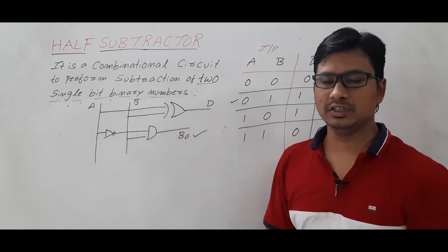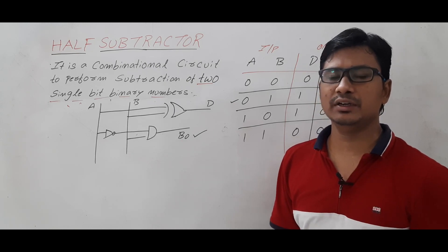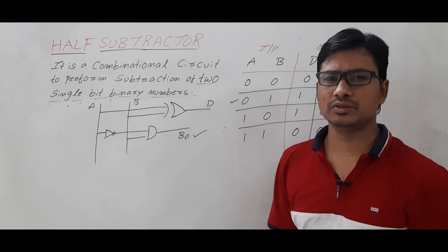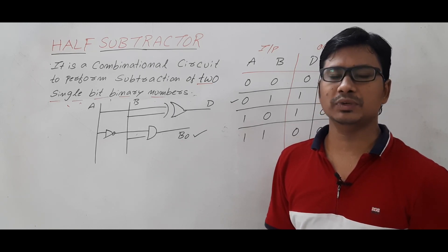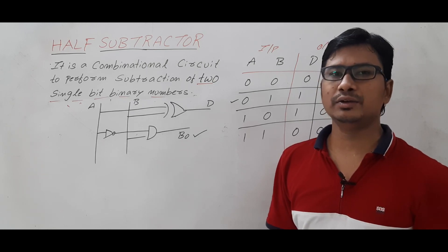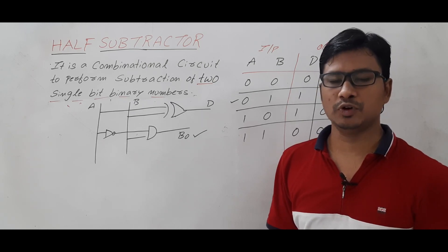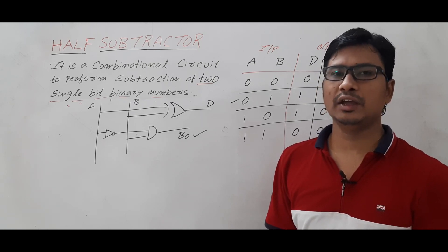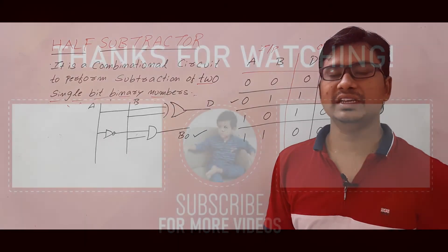So this is the combinational circuit for the half subtractor. I hope you have understood what a half subtractor is, what its truth table is, and what its combinational circuit looks like. If you still have any doubts, feel free to ask in the comment section. I will try to clear your doubts as early as possible. Thank you for watching, have a nice day.